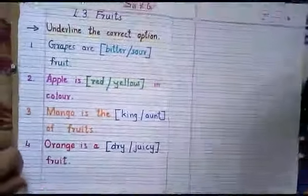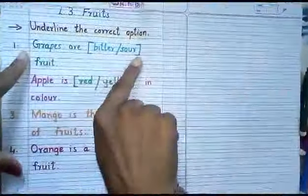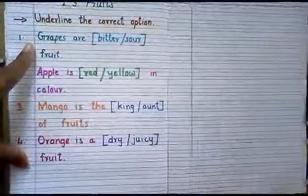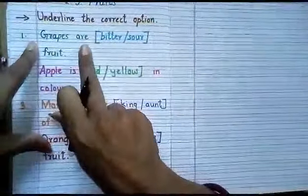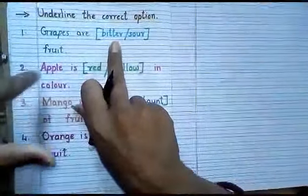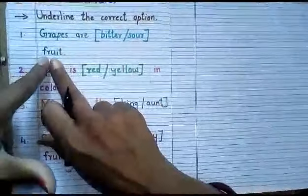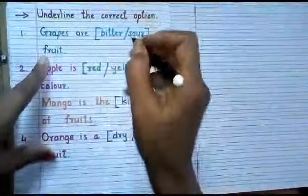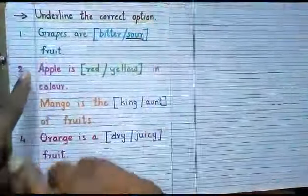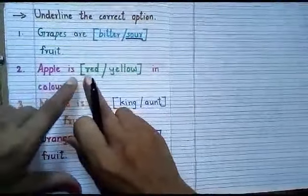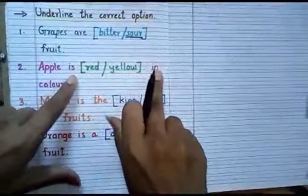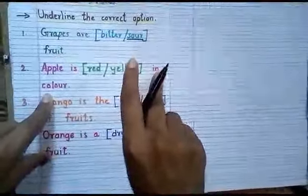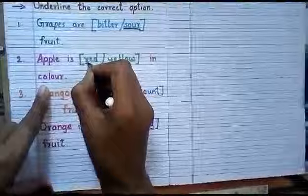Now already I have wrote the question. Grapes are bitter or sour fruit. Apple is red or yellow in color. What is the color of apple? It is red. Our answer is red.